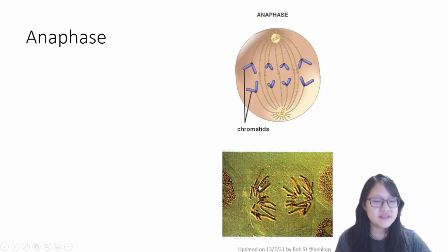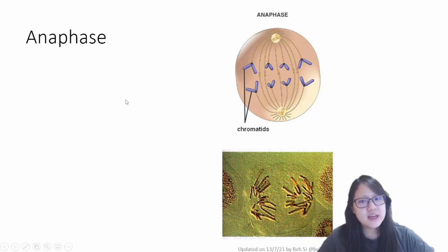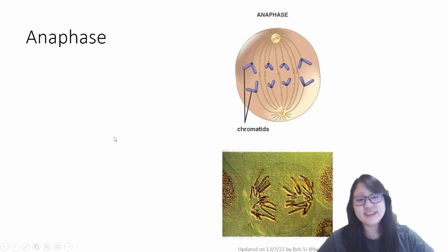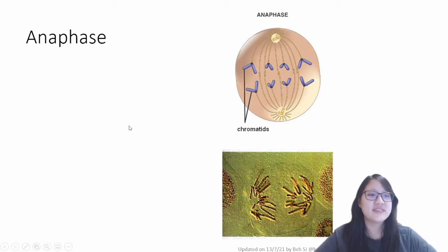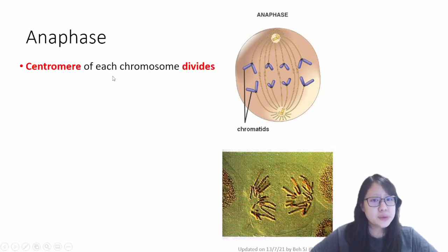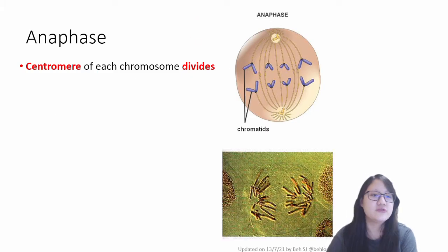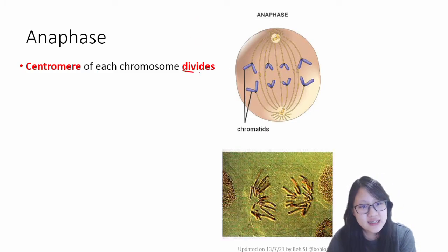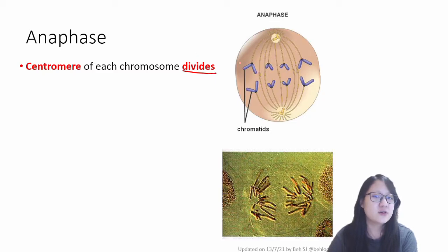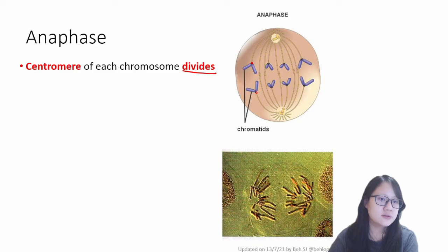Moving on to anaphase, our third stage of mitosis. Anaphase is where things get completely crazy and interesting. What happens during anaphase? The centromere of each chromosome divides — it doesn't break, it doesn't replicate; the centromere divides. So one centromere becomes two — this used to be one chromosome, now it's two.